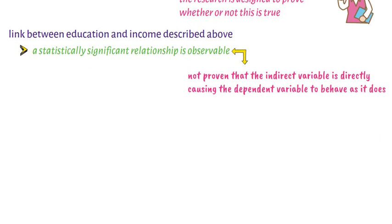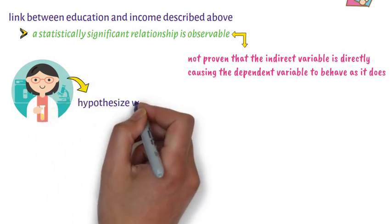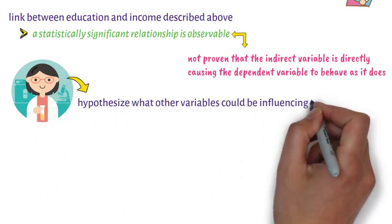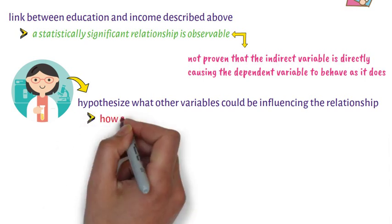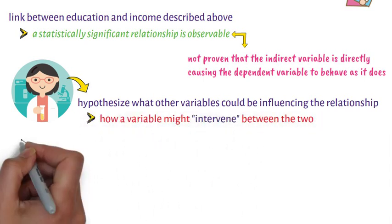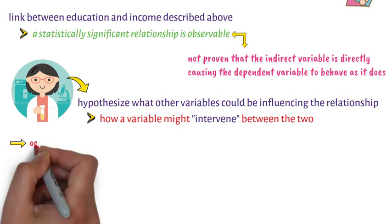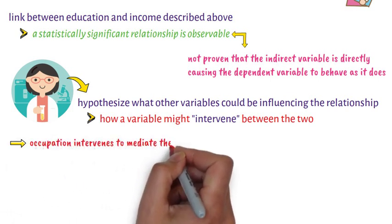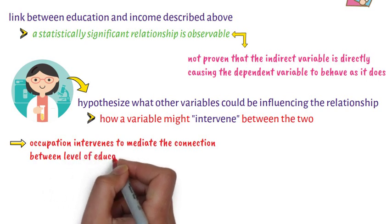When this occurs, researchers then hypothesize what other variables could be influencing the relationship, or how a variable might intervene between the two. With the example given above, occupation intervenes to mediate the connection between level of education and level of income.